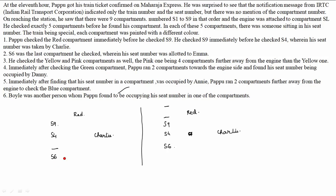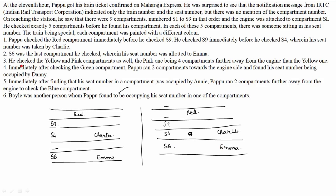There are two cases possible where S6 is last — in one case an additional compartment is at one position, in the other case at another. We have 5 compartments total, so we enumerate: 1, 2, 3, 4, 5. For S6, Emma is present in both cases. Next condition: he checked yellow and pink compartments, with the pink one being 4 compartments further from the engine than the yellow one — so if yellow is at position A, pink is at A+4.